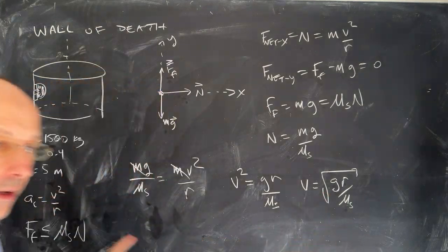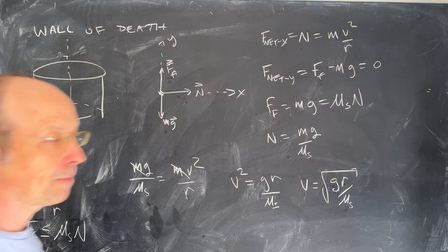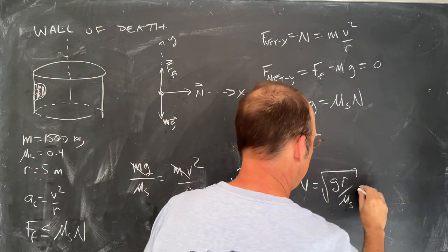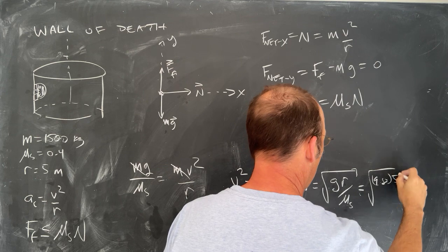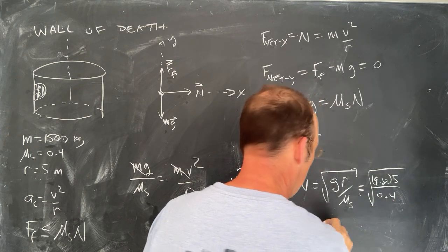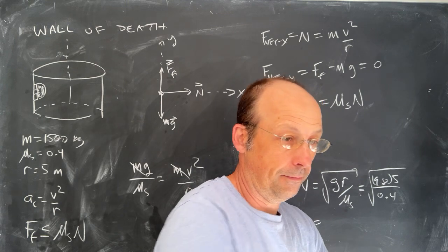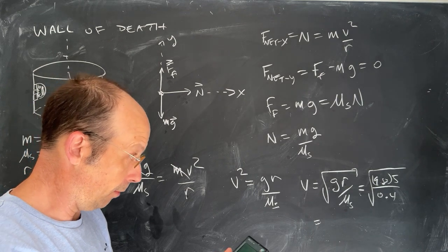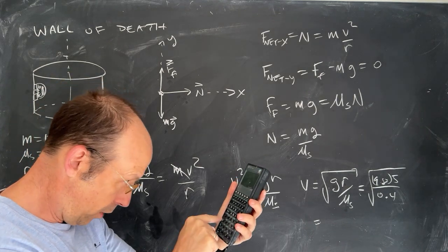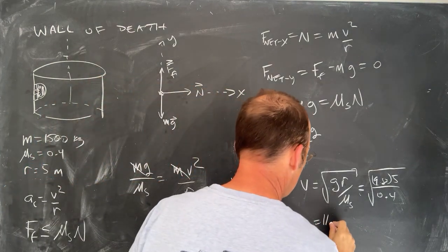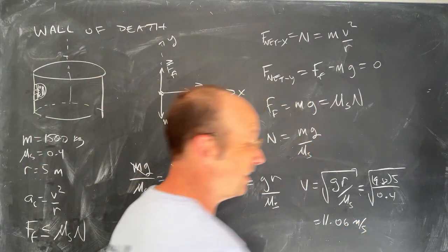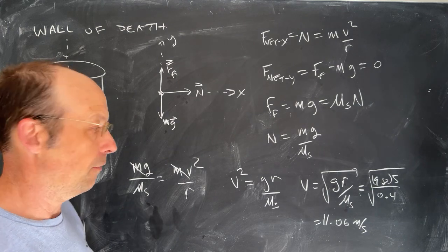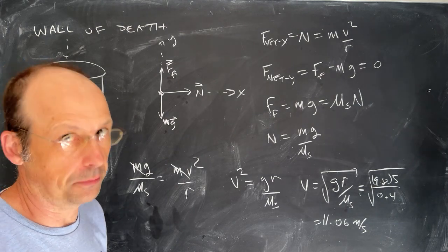Let's plug in our values: V = √(9.8 × 5 / 0.4), which gives approximately 11.06 m/s. That's not super fast — it's faster than you can run, but it's roughly 20 miles per hour or so.